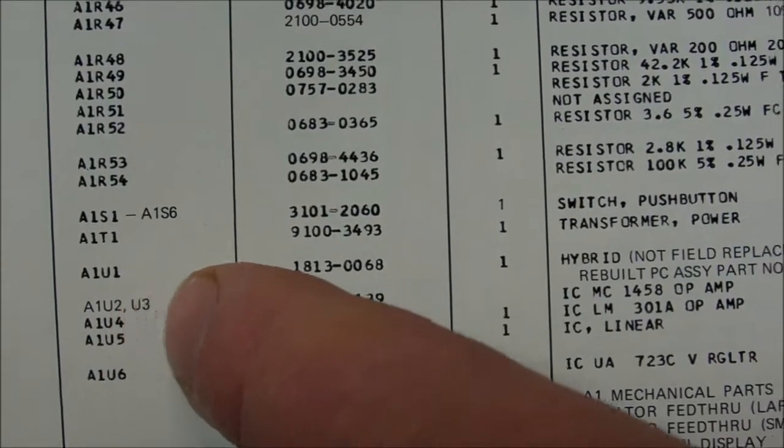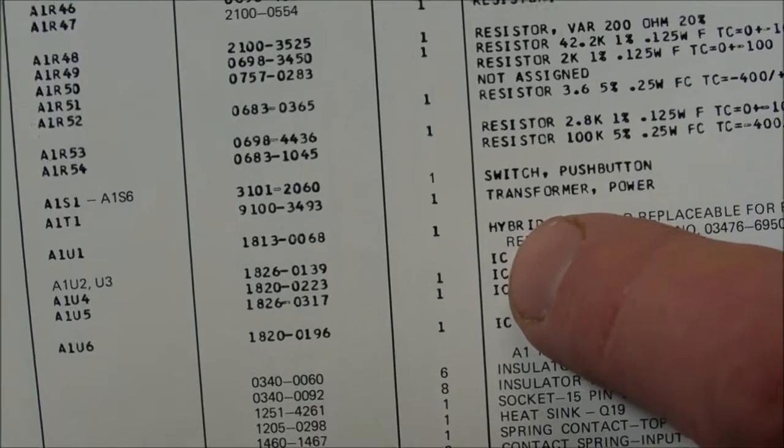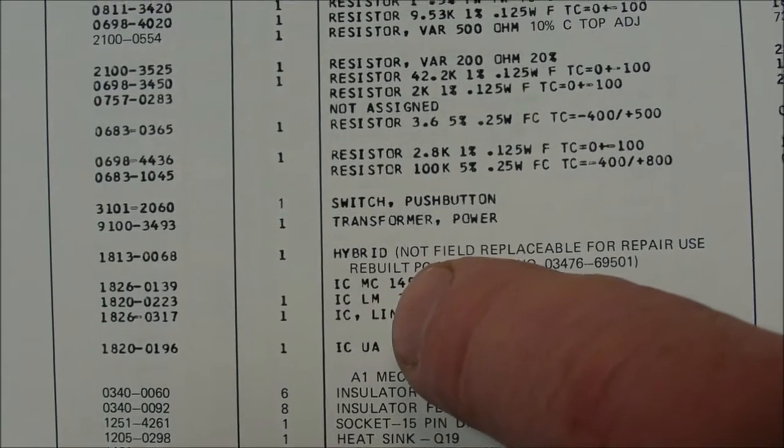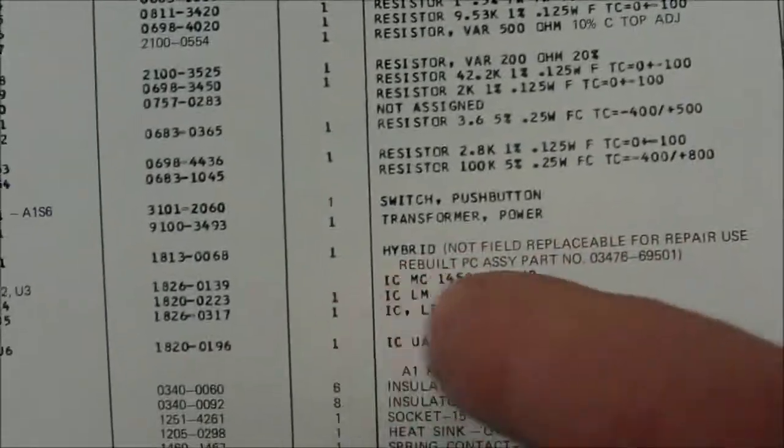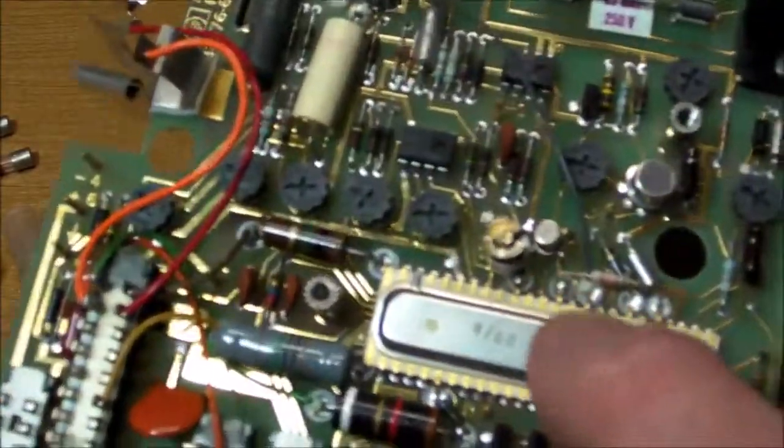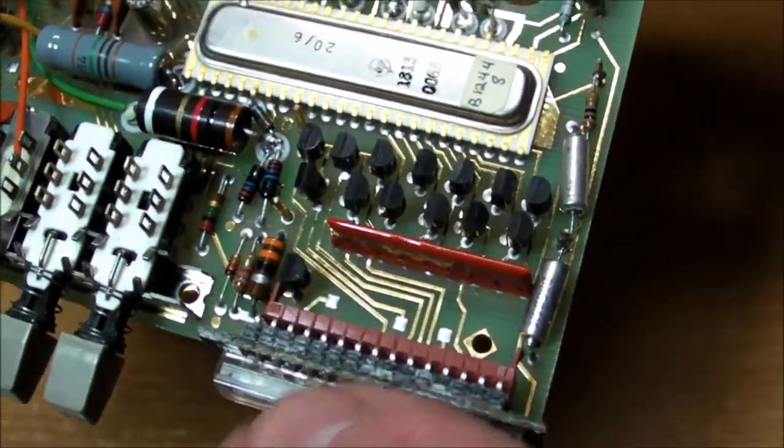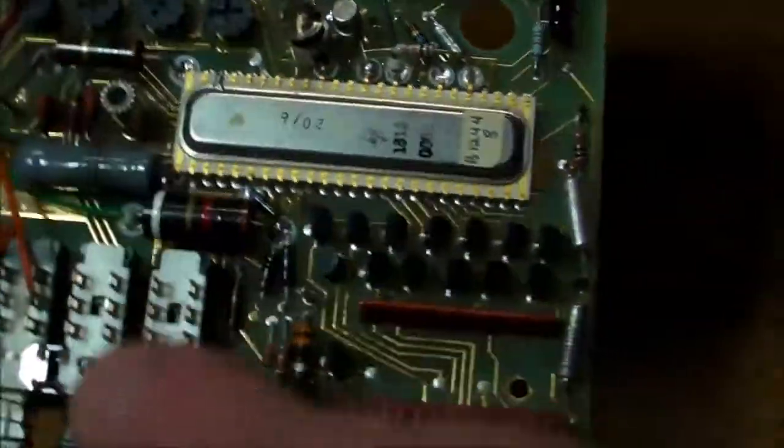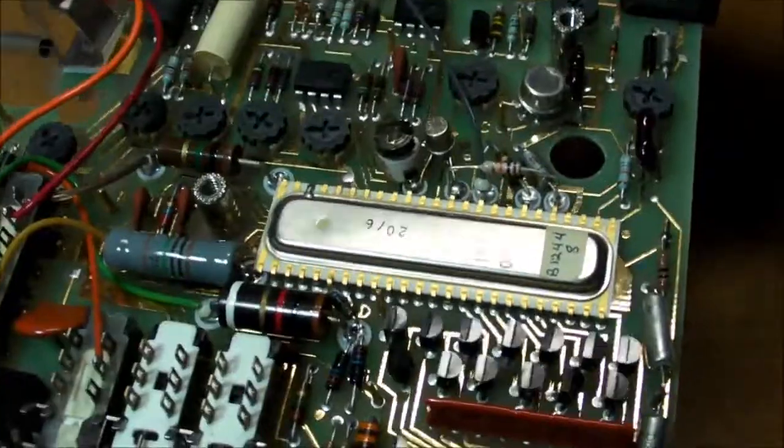And so let's look at the list of parts. U1, there's the HP part number and a hybrid, so it's basically just an NMOS hybrid IC, not field replaceable. For repair, use rebuilt printed circuit board assembly, part number blah blah blah. So this thing, if this thing is busted at all when it comes to the LED display with some of the segments being out, then it's technically not field replaceable.